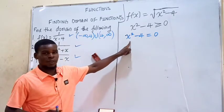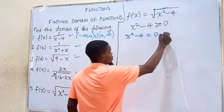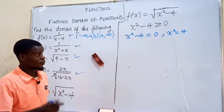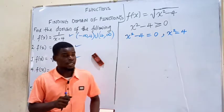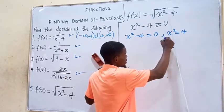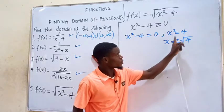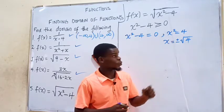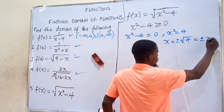Equating to 0 and solving for x: that tells us x squared is equal to 4, by moving negative 4 to the right-hand side. To find x, we take the square root of both sides. Since x is an unknown, the square root gives us x equals positive or negative square root of 4, which gives us positive or negative 2, because the square root of 4 is 2.